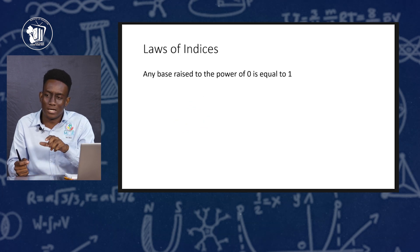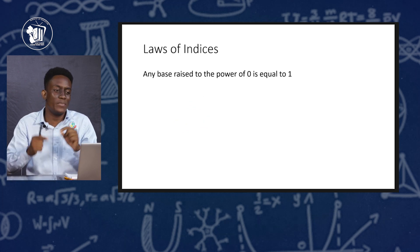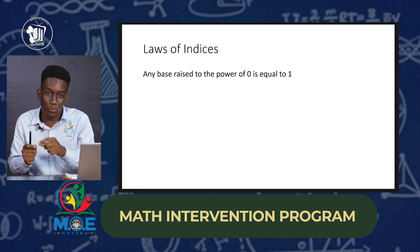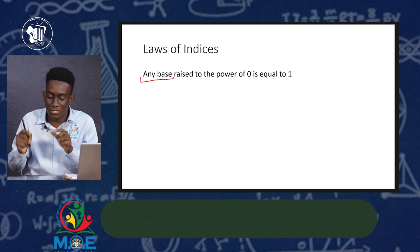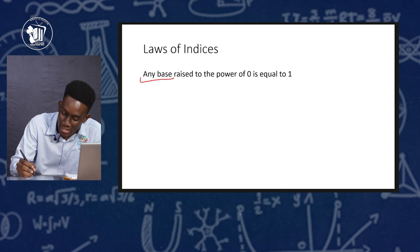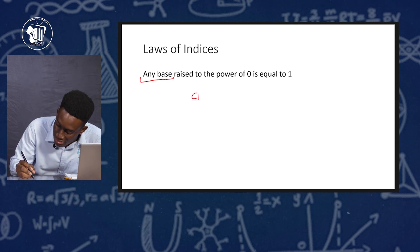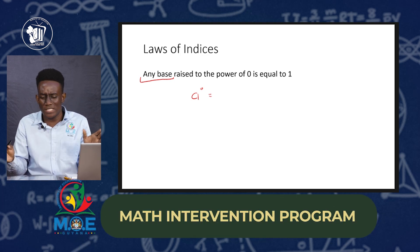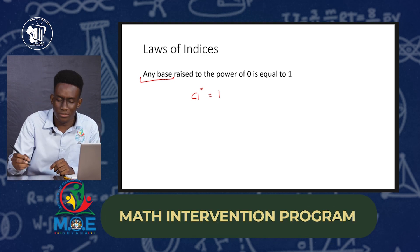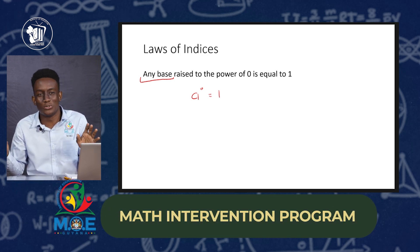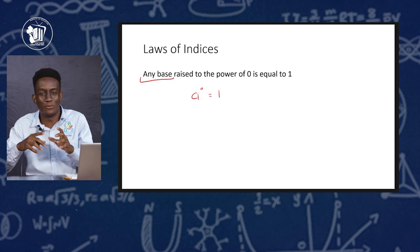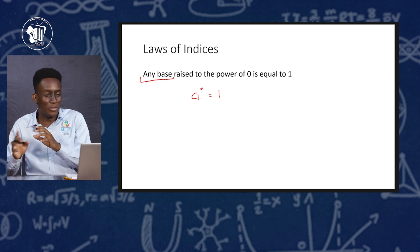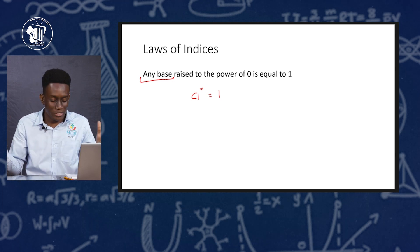So let's look at the next law. Any base raised to the power of 0 is equal to 1. So if we have a raised to the 0 power, that simplifies to 1. There is a long proof to show why this is true, but for now we'll just use this as a law — any base raised to the power of 0 is 1.